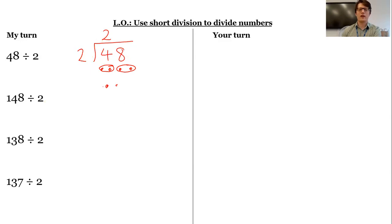What about eight then? Well, let's draw eight dots. How many groups of two can I make in eight? Well, one, two, three, four. I can make four groups of two in eight. So 48 divided by two is 24.